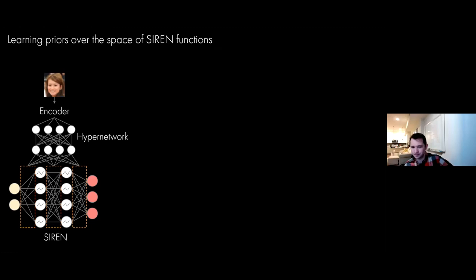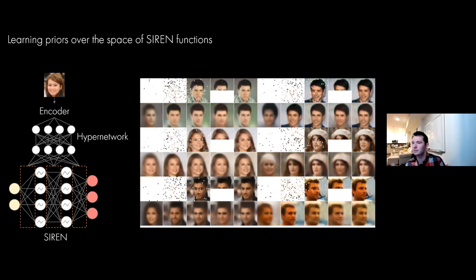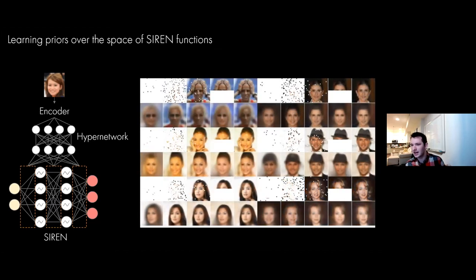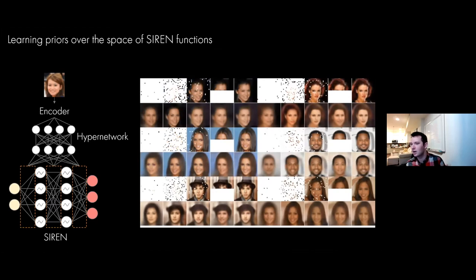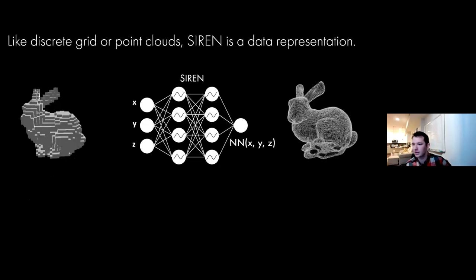We also demonstrated parameterizing a space of functions using SIREN to learn a prior. A convolutional encoder regresses a latent code, mapped to SIREN parameters via a hyper network, representing not just a single signal but a space of signals. For image inpainting, sparse observations are used to optimize a latent code that maps to a SIREN representing the full image, recovering a plausible image from the prior.